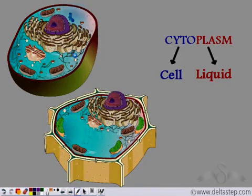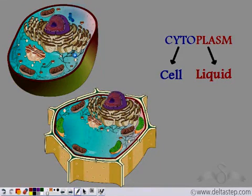Cyto means the cell and plasm means liquid. So cytoplasm is the cell liquid in which all the cellular organelles are embedded.